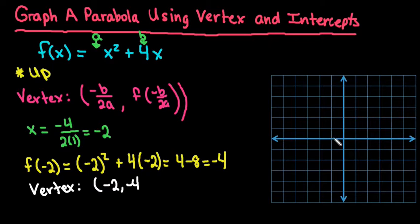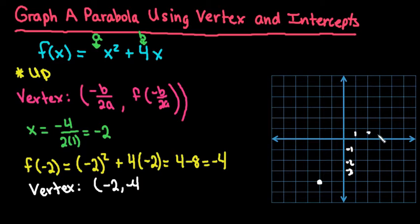On the graph, I go to negative 2, then down 1, 2, 3, 4 to plot the vertex. For this graph I'm counting by ones on my scale — going negative 1, negative 2, negative 3 on one side and 1, 2, 3 on the other. It's important to know what you're counting by. Our vertex is at negative 2, negative 4.